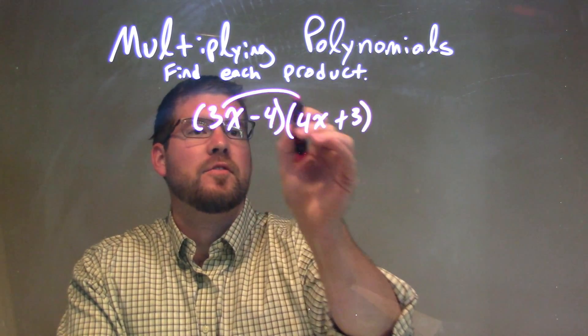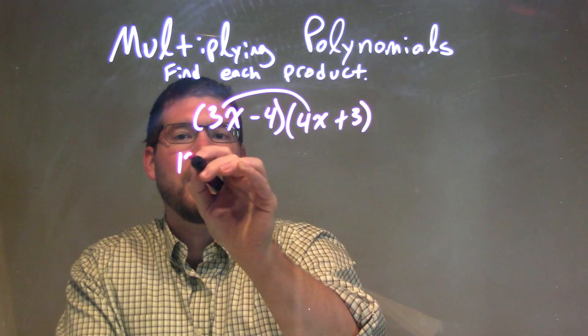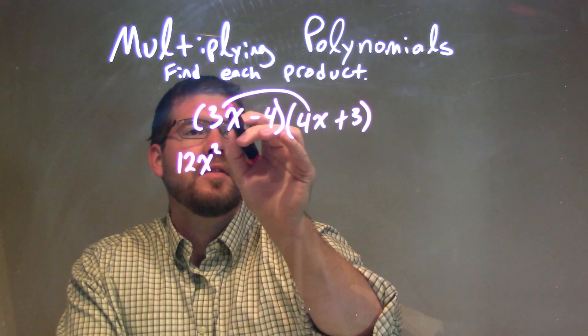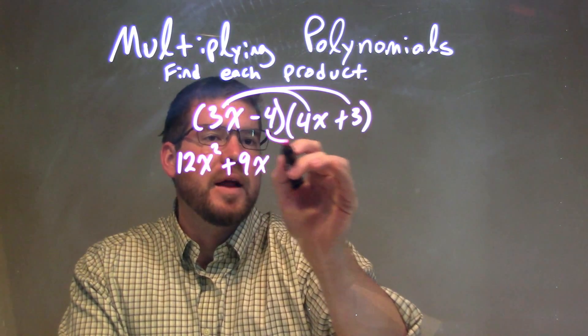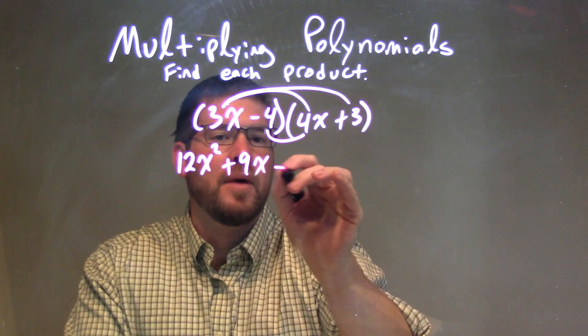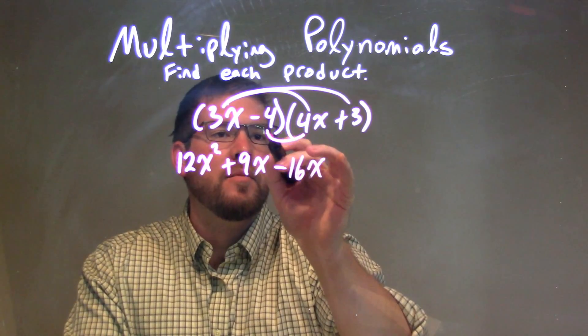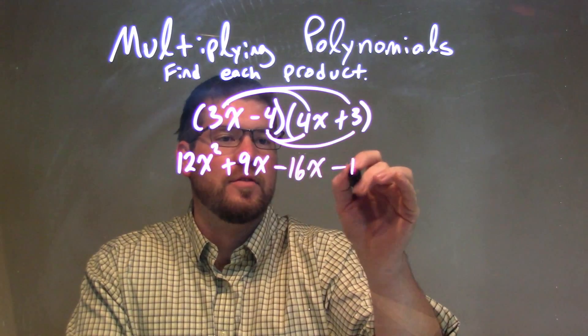So we distribute: 3x times 4x, which is 12x squared. Then 3x times 3, which is 9x. Minus 4 times 4x is minus 16x. And minus 4 times 3 is minus 12.